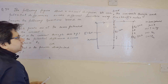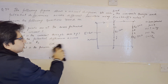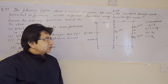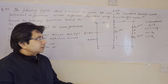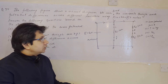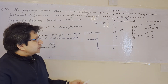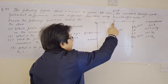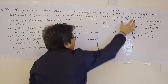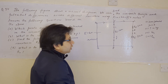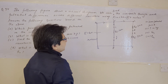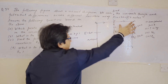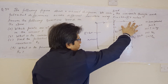We know that wire has zero resistance. So between points A and B, and B and C, there is wire only. Therefore, we can say that these points are at the same potential.